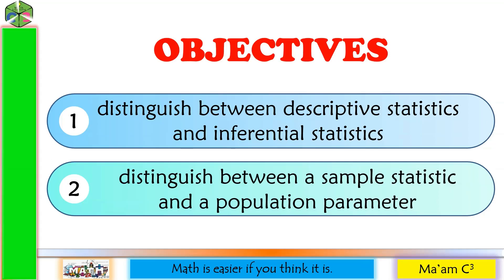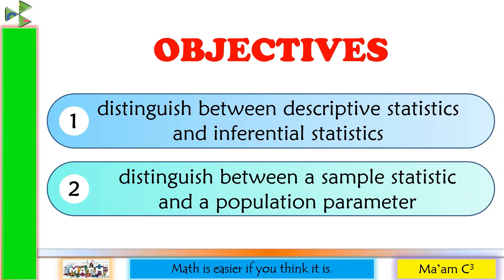Our objectives in this lesson are the following: distinguish between descriptive and inferential statistics, and distinguish between a sample statistic and a population parameter.